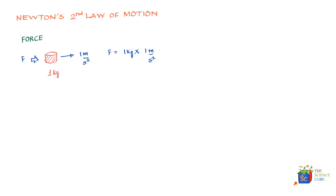So 1 kilogram times 1 meter per second squared can be written as 1 kilogram·meter per second squared. Since this is a little long and cumbersome, it is often written as 1 Newton — named after the great scientist Sir Isaac Newton. If you move the object with an acceleration of 2 meters per second squared, the force responsible would be mass multiplied by 2 meters per second squared, which equals 2 Newtons. Force is a vector quantity and follows all rules of vector algebra.